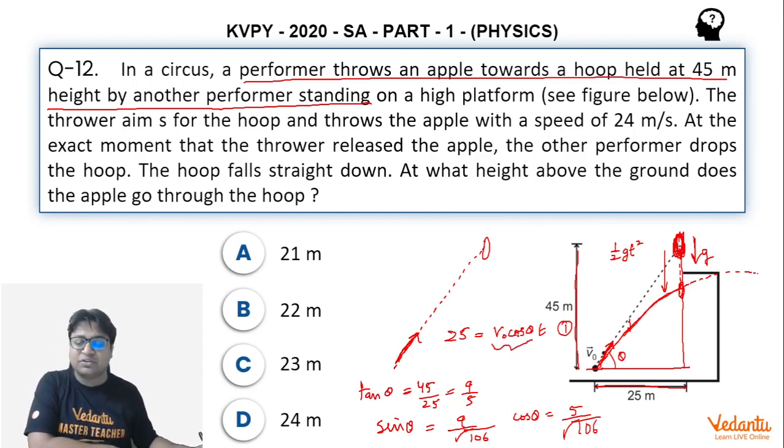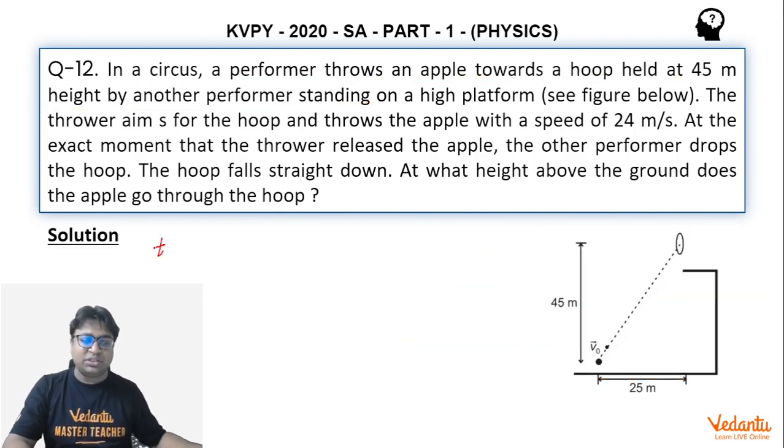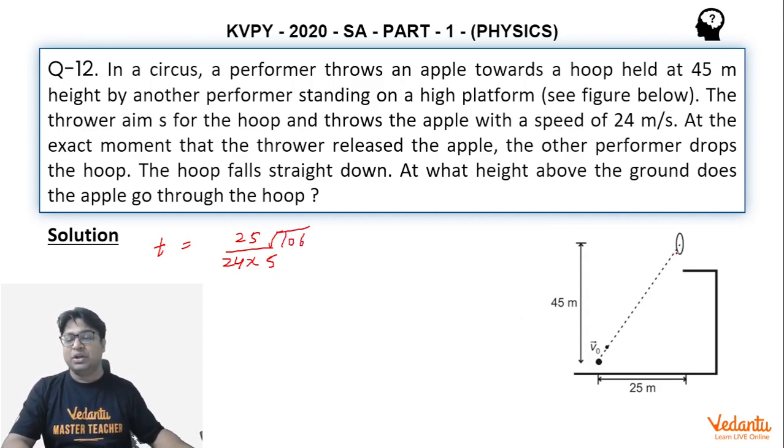Using this value we can substitute the value of v0 here, we can substitute the value of cos theta here, and we will get the value of t. So the value of t would be 25 divided by 24 into cos theta. Cos theta was 5 divided by root of 106. So this is the time after which the apple passes through the hoop.